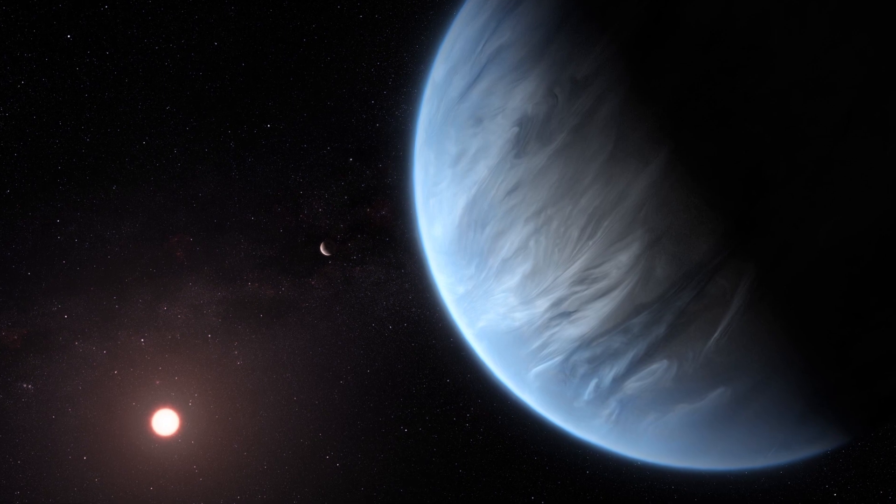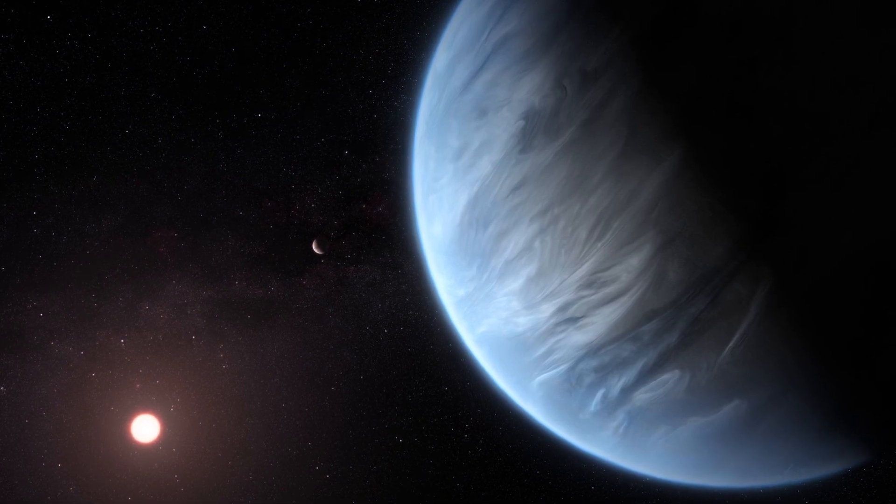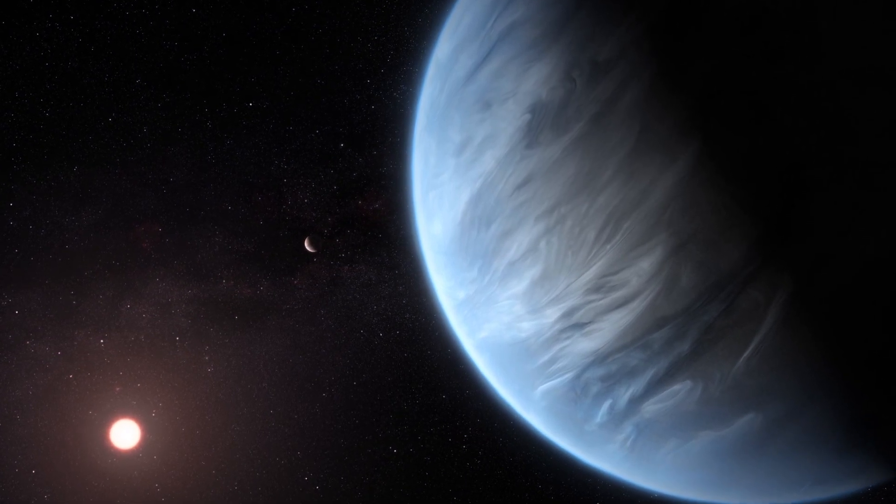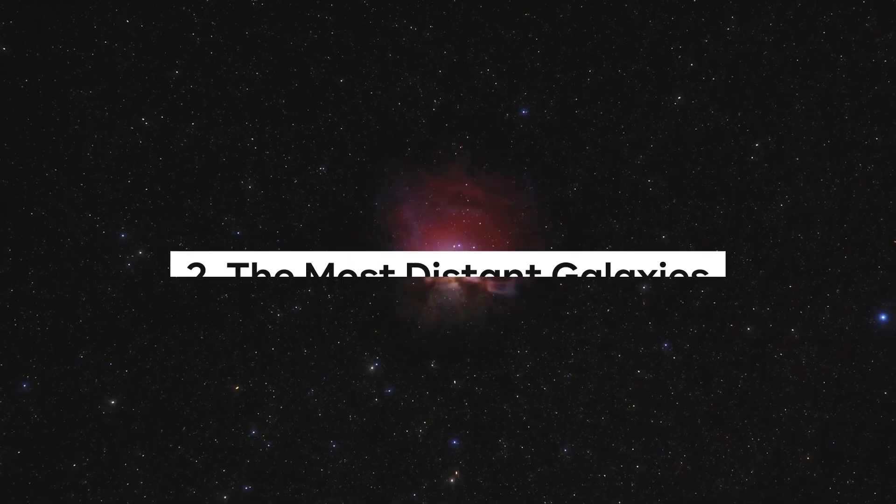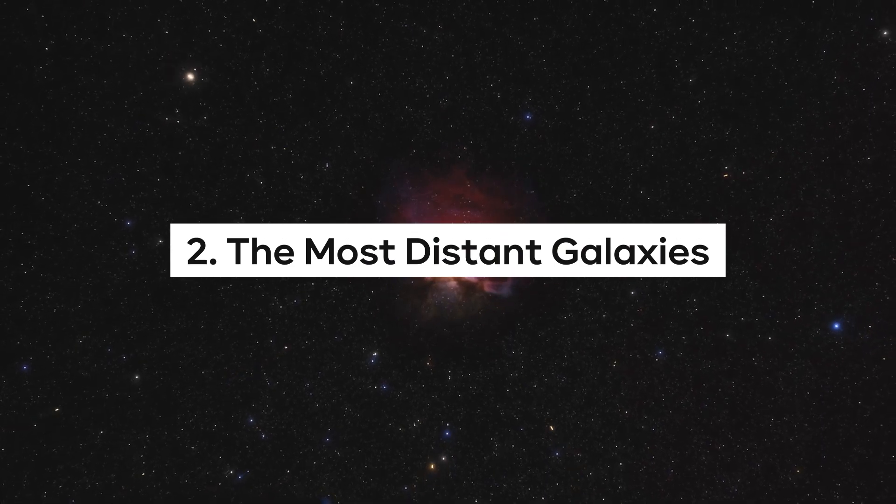Two further Jupiter-sized exoplanets have been revealed to have water and carbon dioxide in their atmospheres, thanks to transit studies by JWST. At number two we have the Most Distant Galaxies.